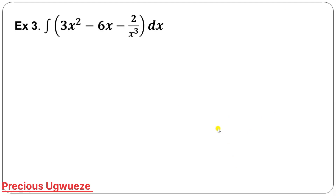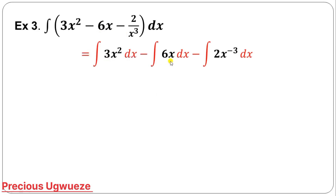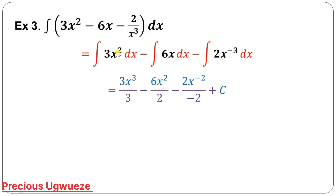For Example 3, this is also a polynomial and we split it into different terms. Note that you don't necessarily have to write out this splitting step — you can go ahead with the integration, knowing that you need to integrate each term individually. The power plus 1 gives 3 over 3, and the next power is 1, giving 2 over 2.